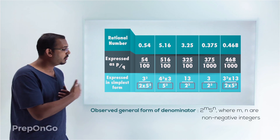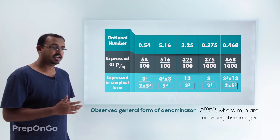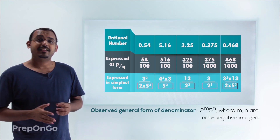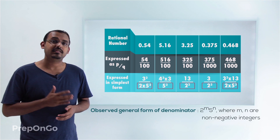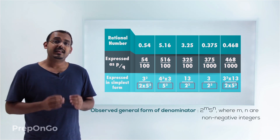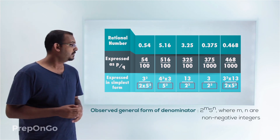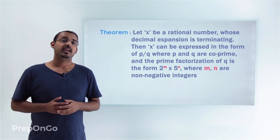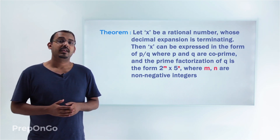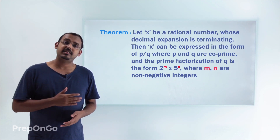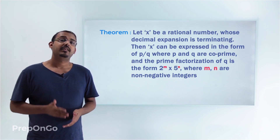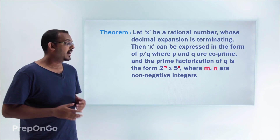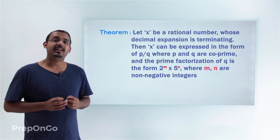So I can represent the denominators in a general form as 2^m into 5^n, where m and n are some non-negative integers. In other words, if we have any rational number of the form p by q with a terminating decimal expansion, the denominator q will be of the form 2^m into 5^n where m and n are non-negative integers. This leads us to a theorem: for x being a rational number with a terminating decimal expansion, x can be represented as p by q where p and q are co-prime and q is of the form 2^m × 5^n with m and n non-negative integers.